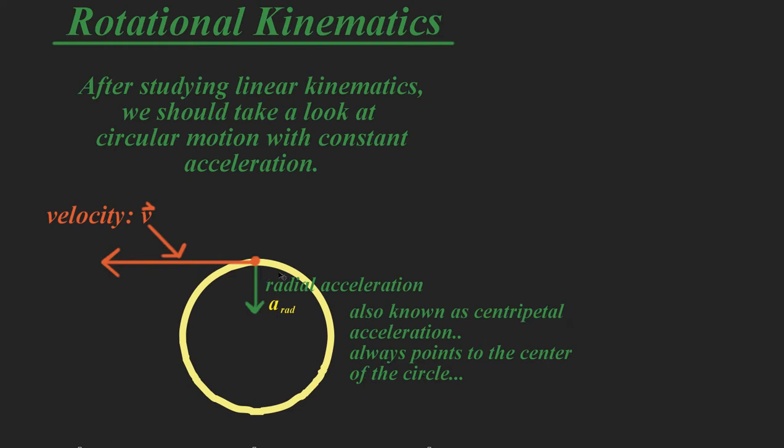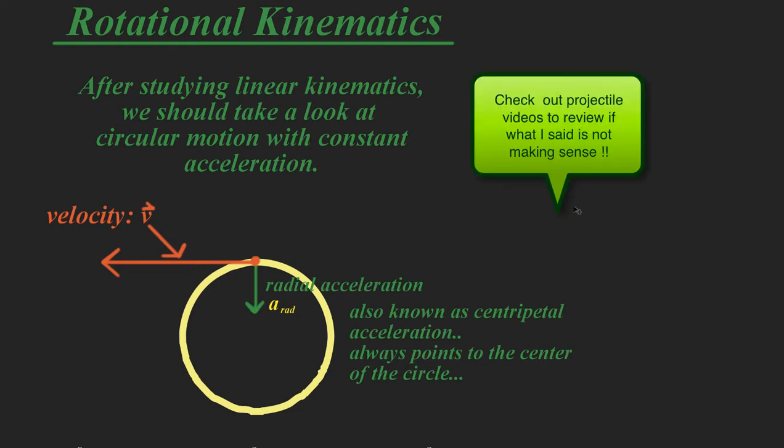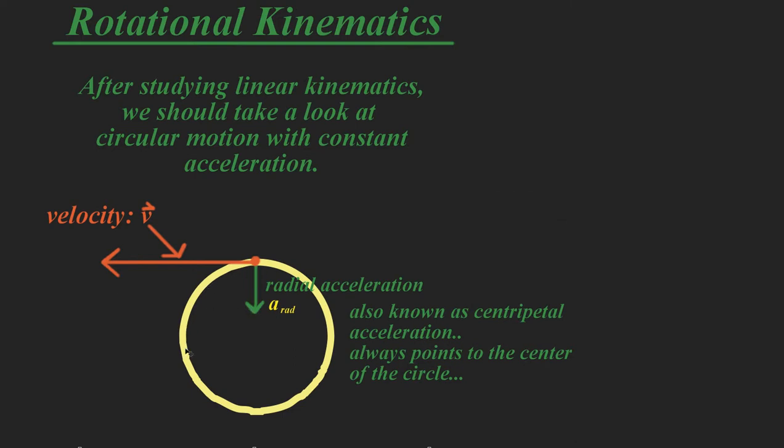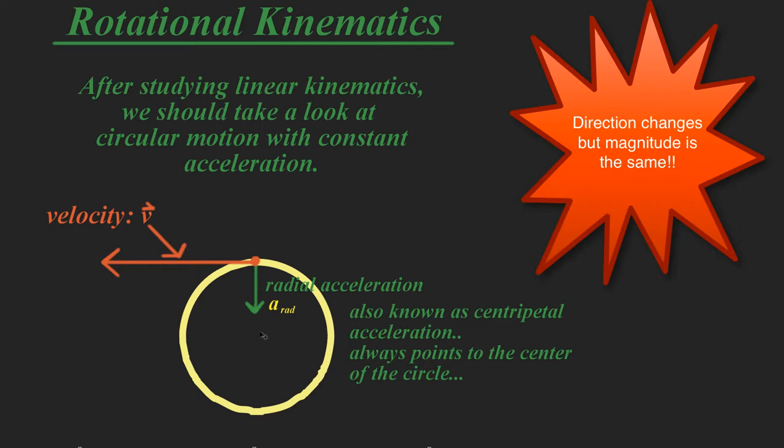Unlike projectile motion, the acceleration, which is gravity, always goes down. It's always in the same direction. This radial acceleration always changes. It's always pointing to the center where that fixed axis is that we are rotating around.